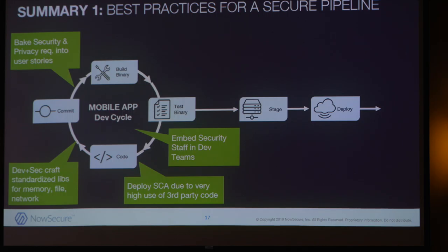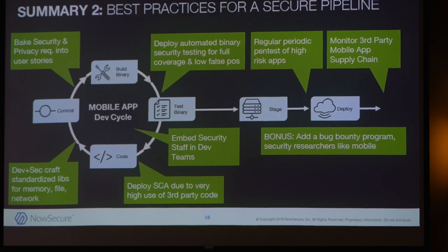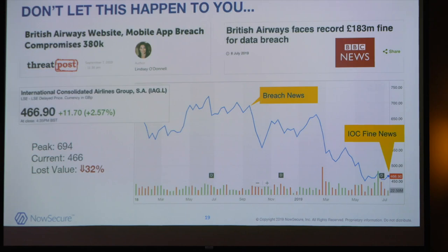Best practices from these organizations: embed security staff in the dev teams, deploy SCA, use standard libraries — these were all talked about earlier — and really make sure you bake security requirements fundamentally into your process. From a tooling perspective, also deploy the automated binary testing. It's a new kind of testing you can add to your tool chain. If it's a tier one app, make sure you still do those manual pen tests. Make sure you monitor your supply chain and production, and please leverage bug bounty programs — that's a great way to find the unfound.